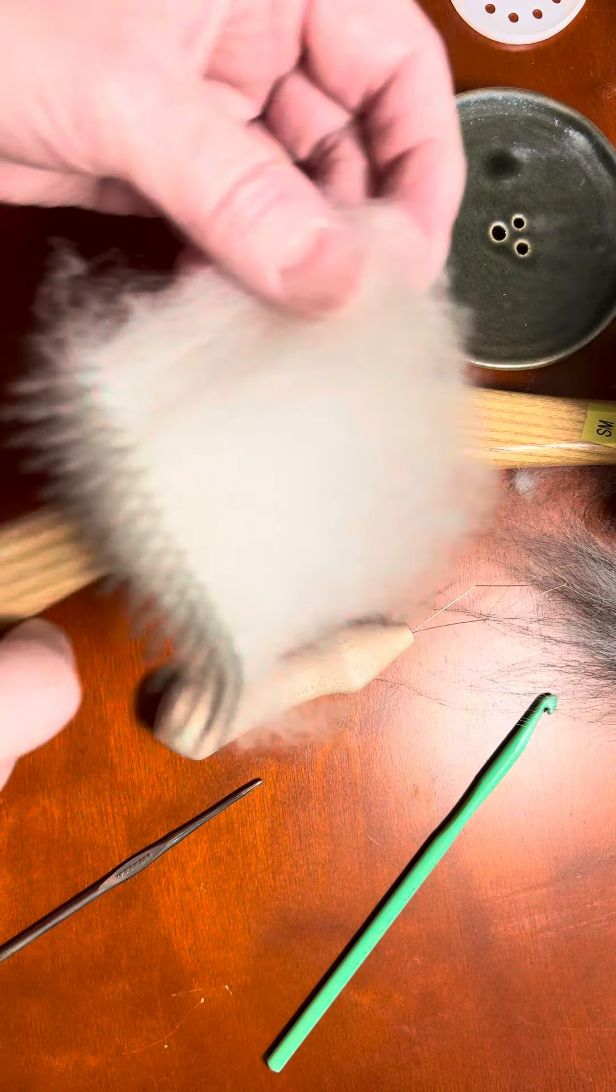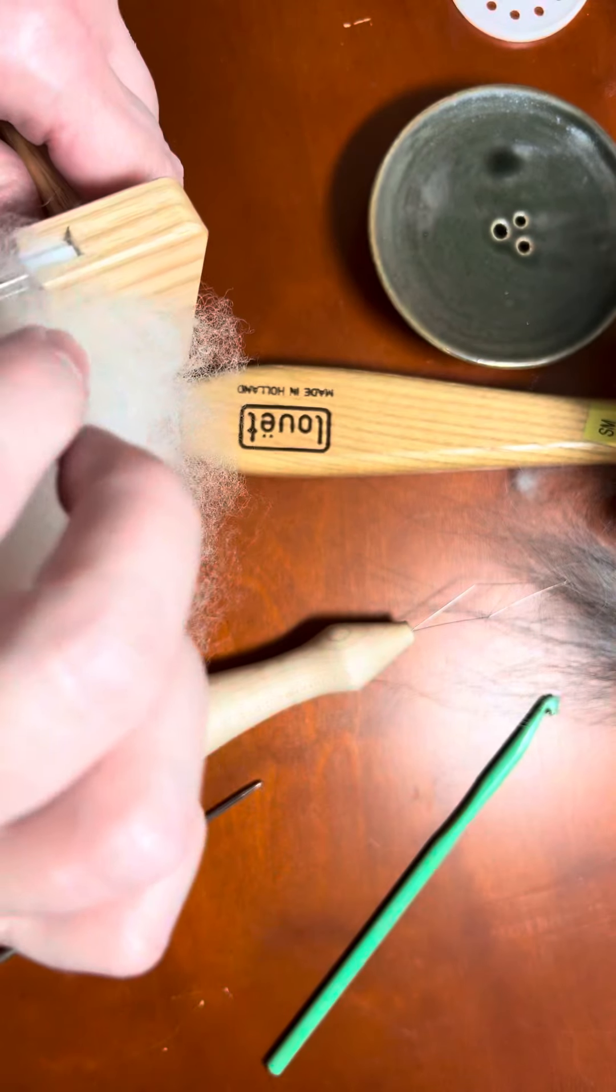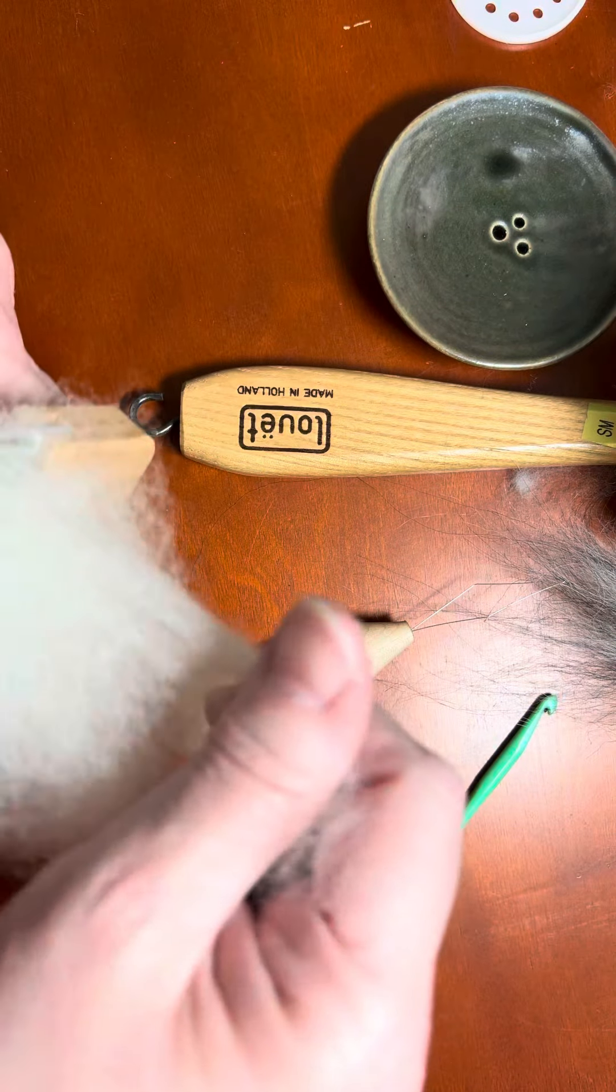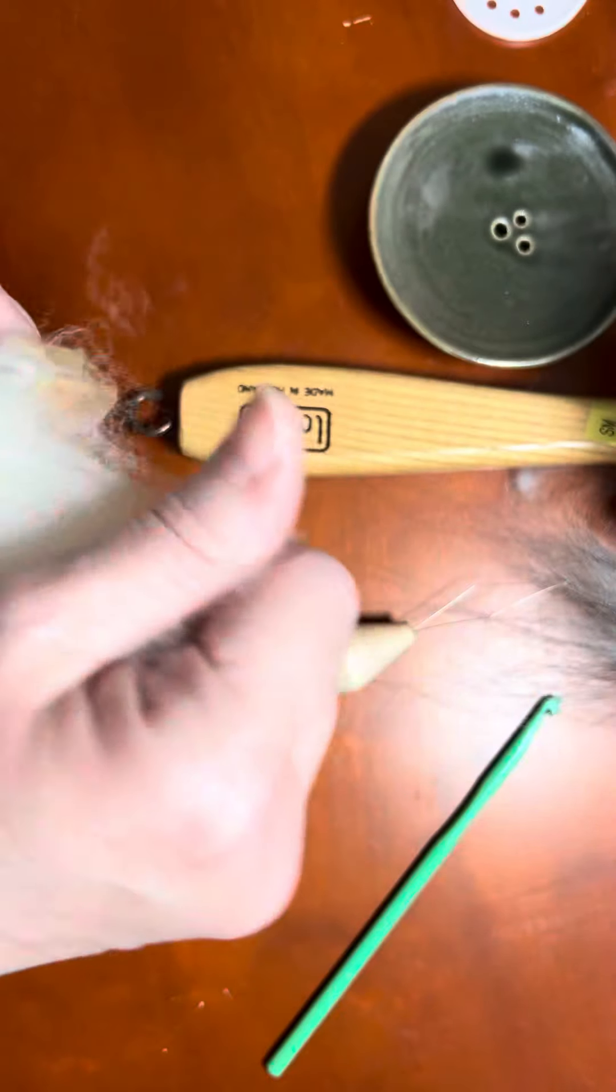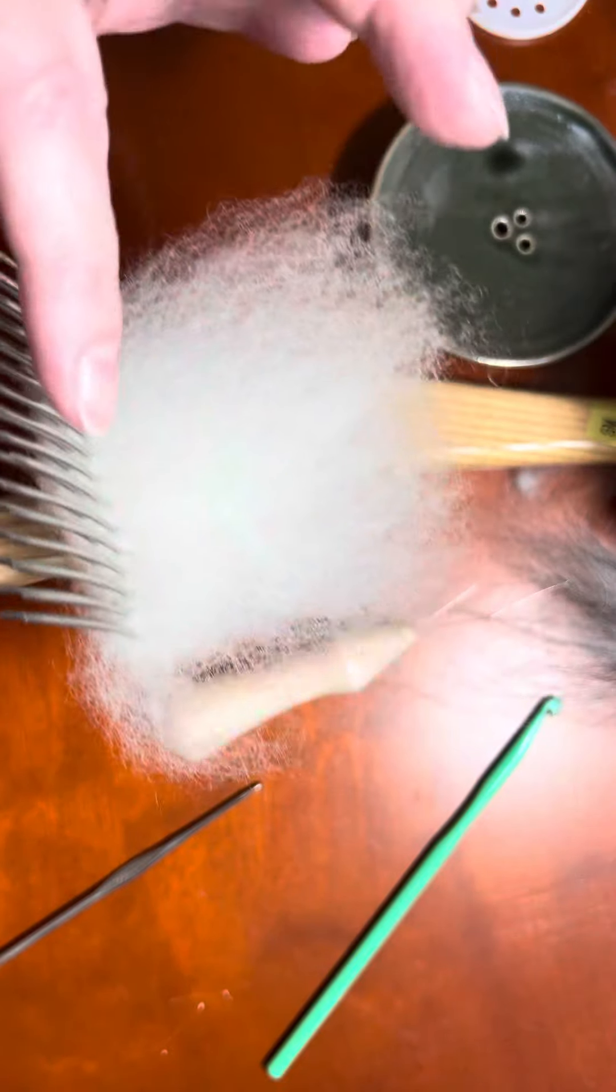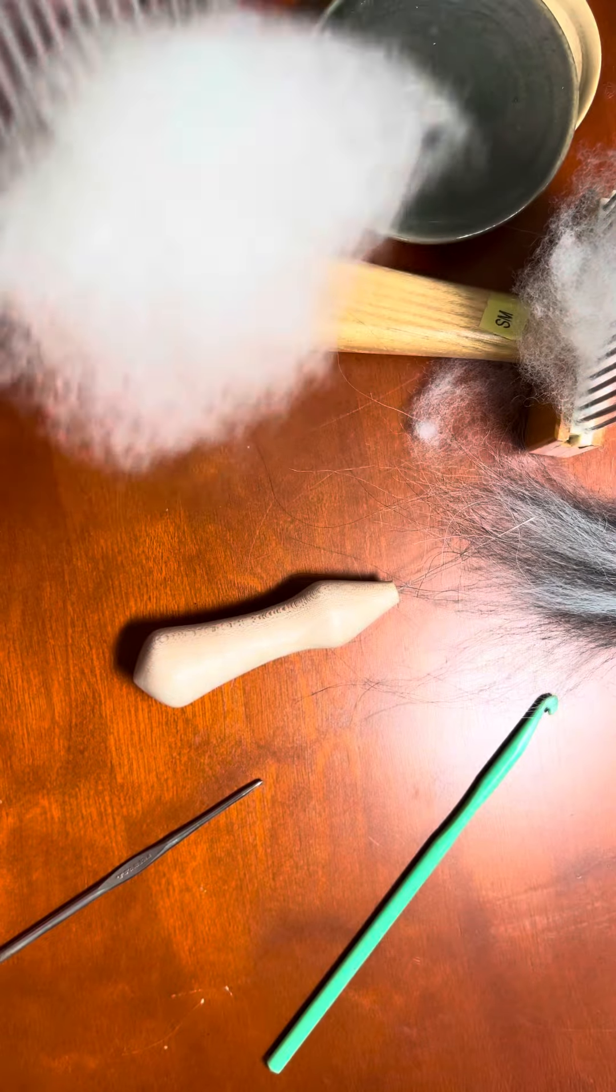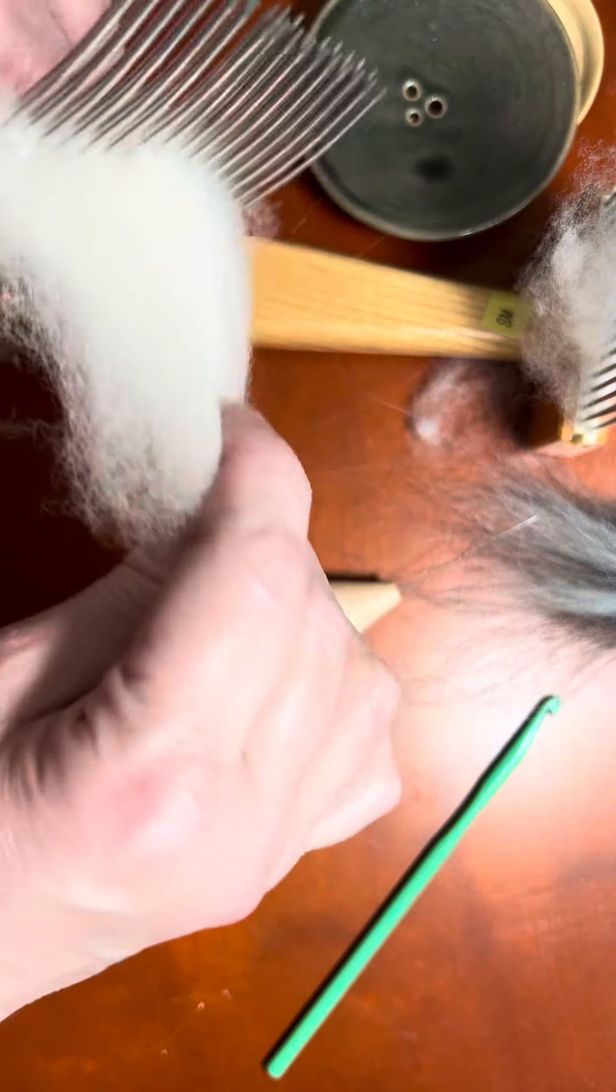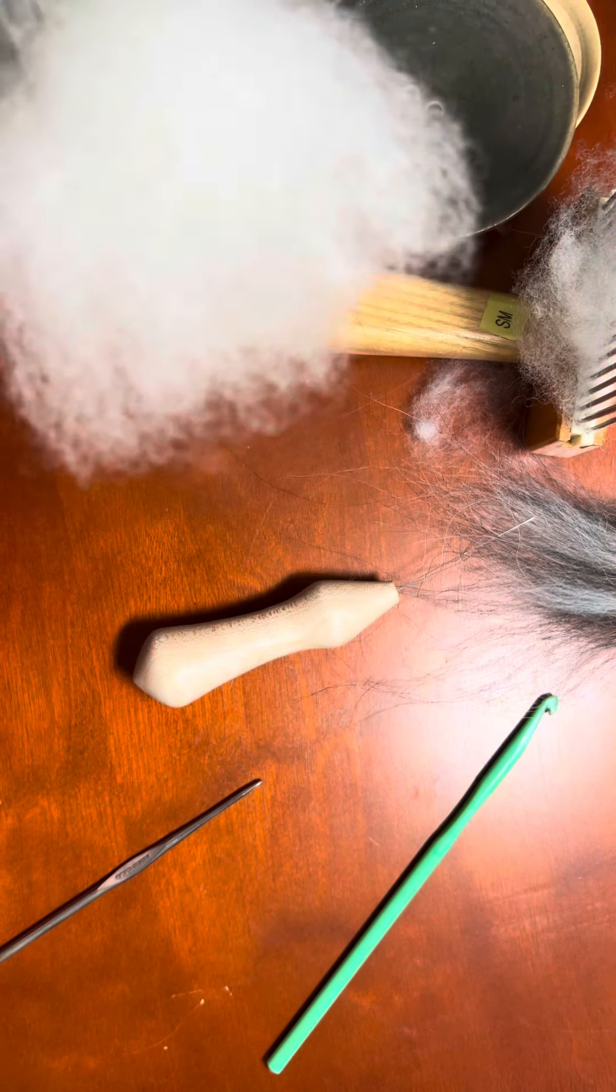When we prepare our fiber for spinning, and let's say we want to make it a worsted or semi-worsted type of final yarn, we have to prepare it so that all the fibers are aligned straight. And if we use these mini combs, there's other types of hand combs like this, not the cards, not the hand cards, but the combs, then this is what I would use a dizz off of.